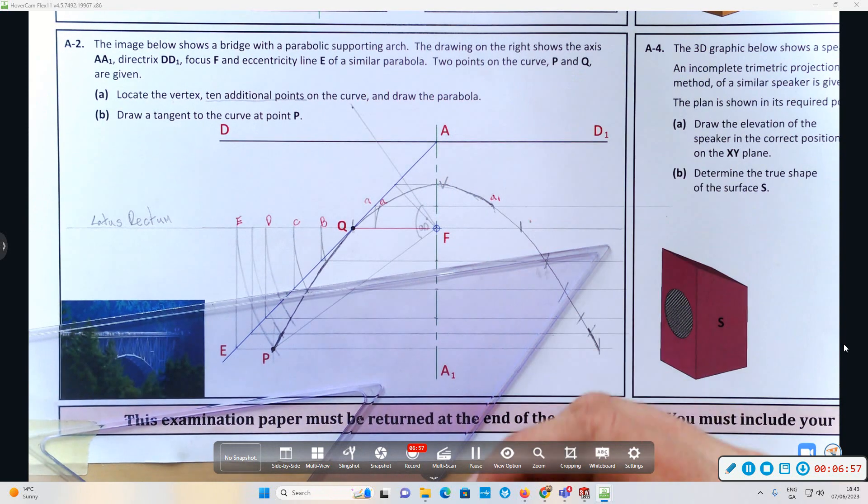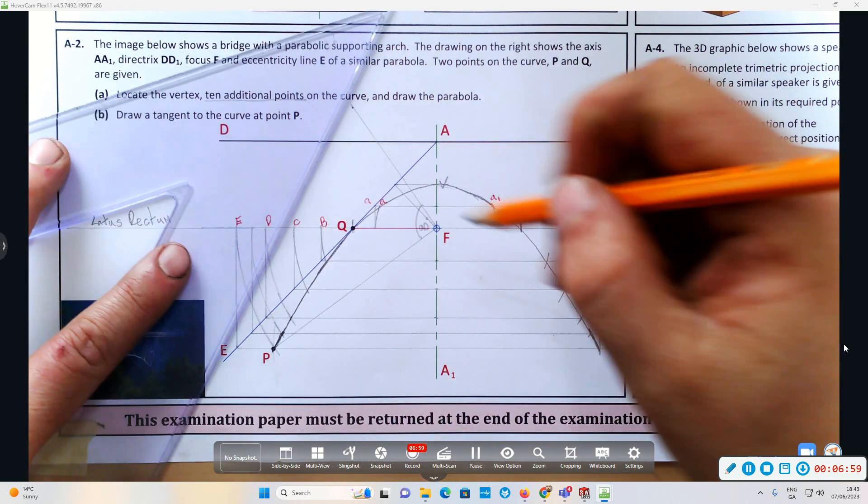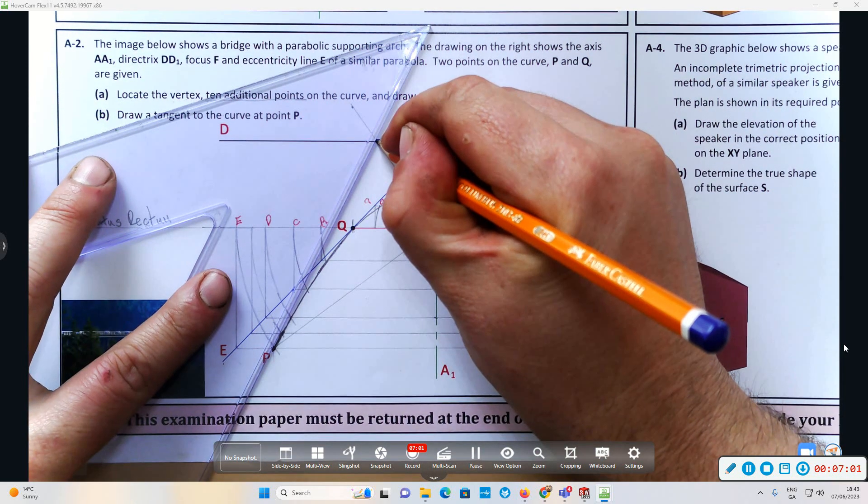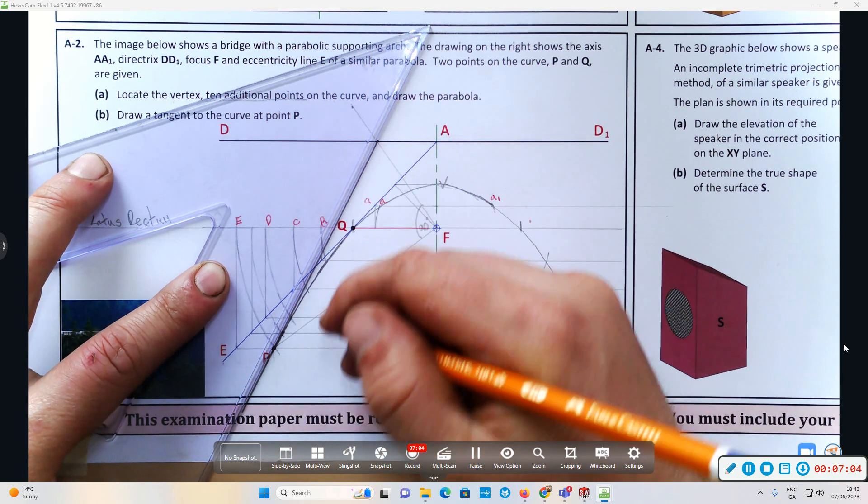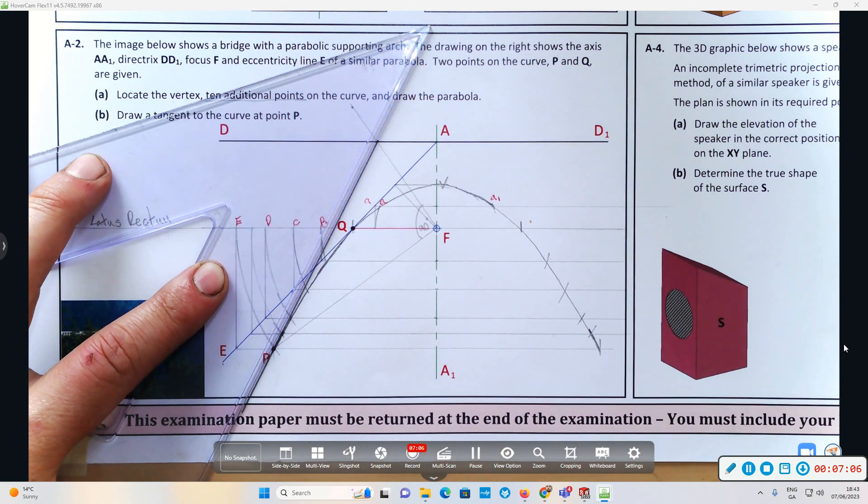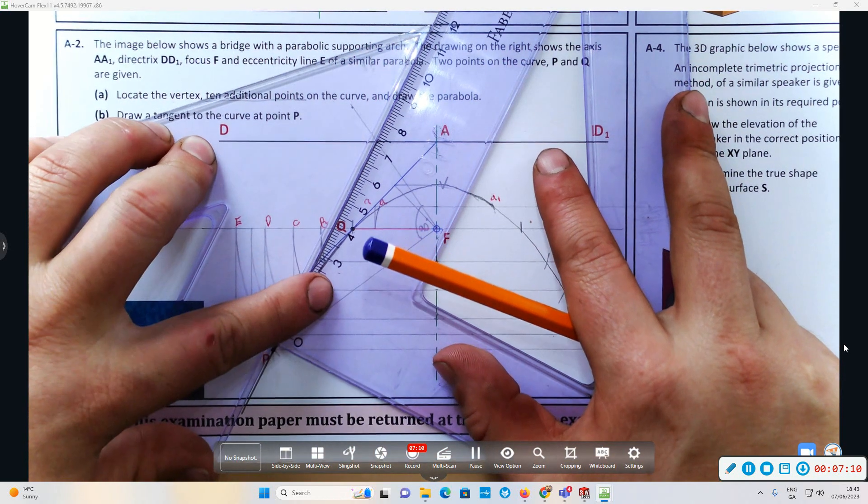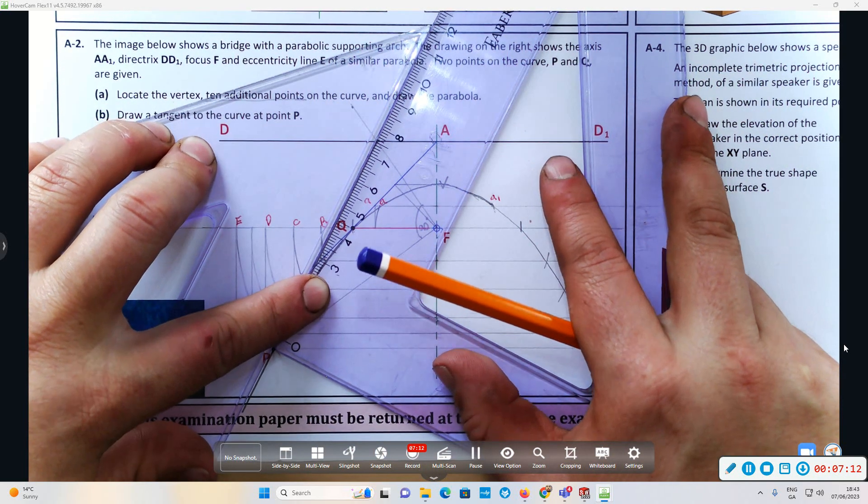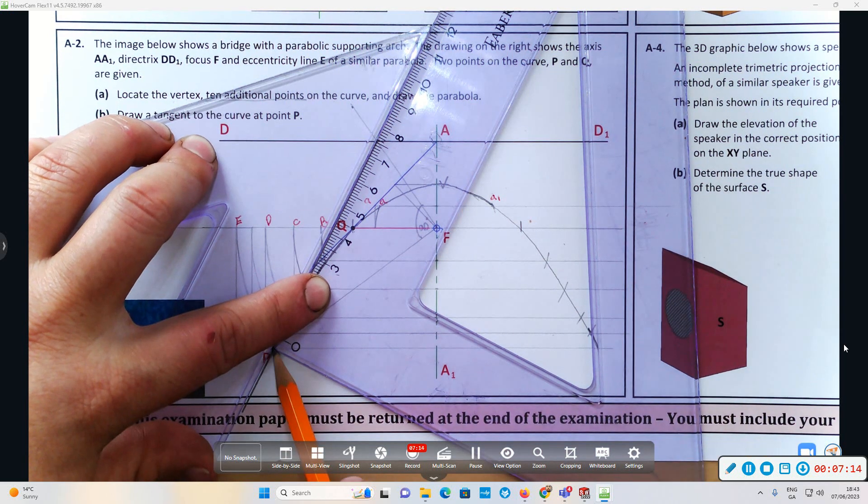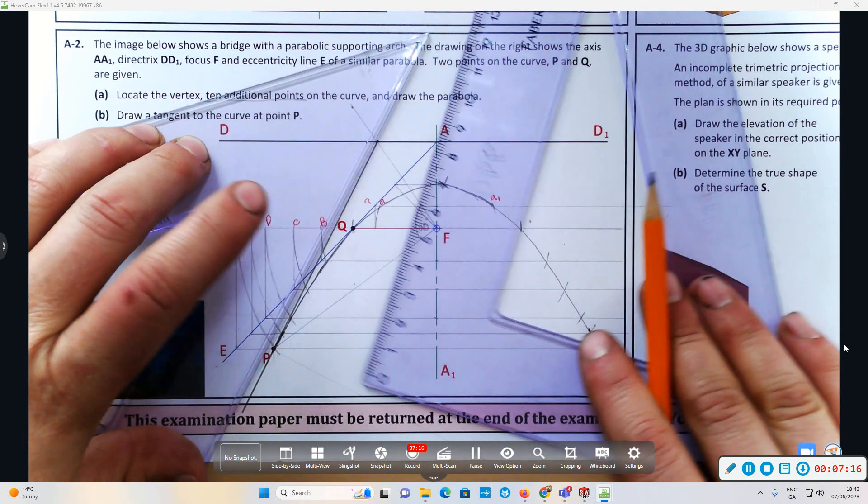Where this hits the directrix, we're going to join this back to point P. Here's our tangent and then I can draw in our normal as well. It's a good habit to join our normal.